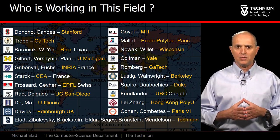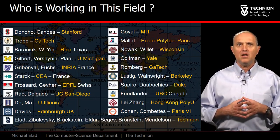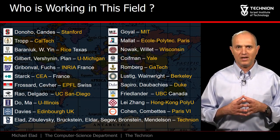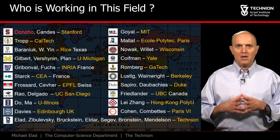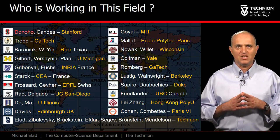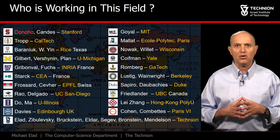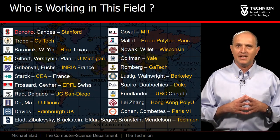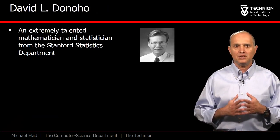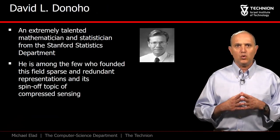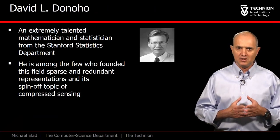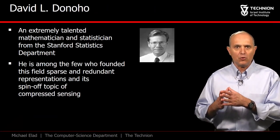The Technion, Israel Institute of Technology, is among the leading places in this arena, with several involved, high-profile scientists. Among all the researchers mentioned in this slide, I would like to give special attention to Professor David Donoho from the Statistics Department at Stanford University. David Donoho is a world-leading mathematician and statistician, and he is one of the leading founders of the field of sparse representations and its spin-off topic of compressed sensing.